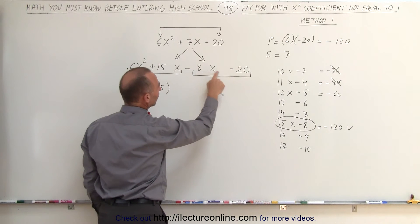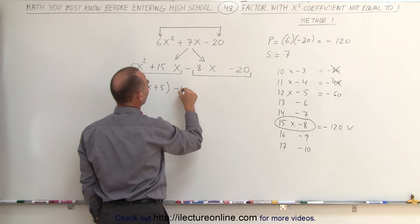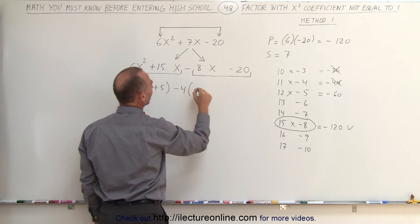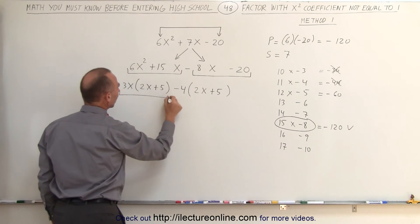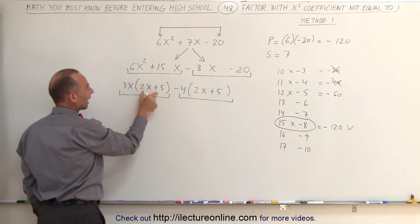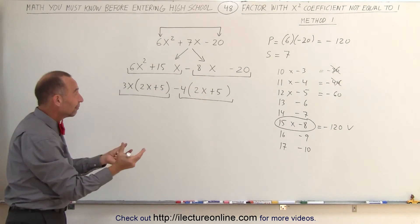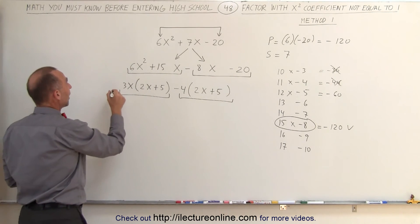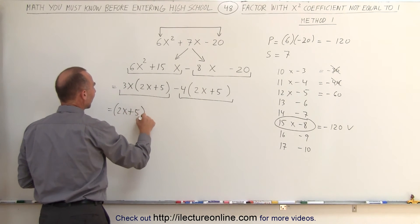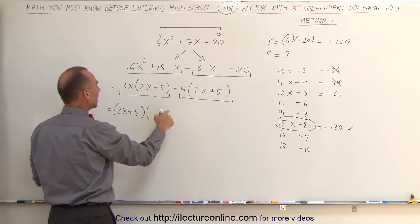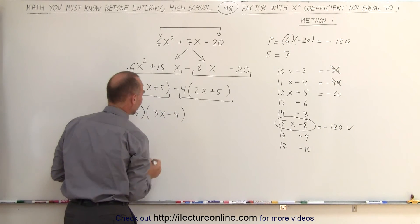In the last two terms, you can factor out a minus 4. When you do that, you also get 2x plus 5. Now notice that 2x plus 5 is common to both groups. Therefore, you can factor out 2x plus 5. On the left group you have 3x remaining, and in the right group you have minus 4 remaining.